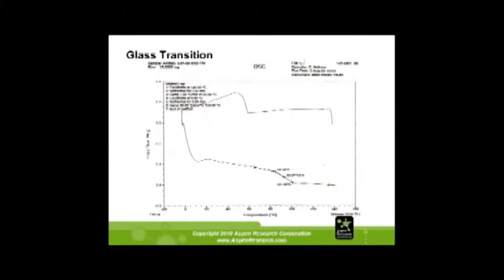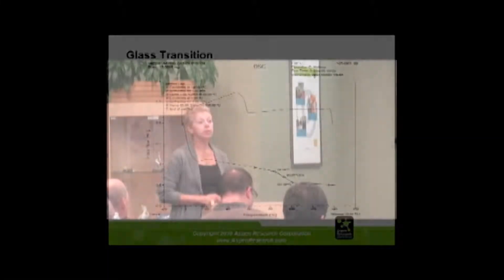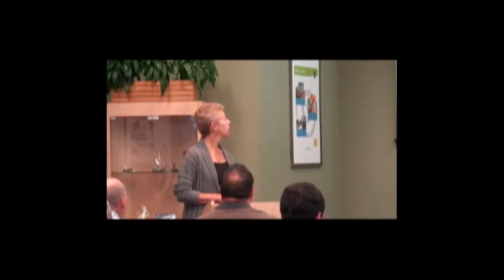Here's a glass transition monitoring application we run for one of our customers. We know that the material needs to have a glass transition around 93 degrees. So periodically throughout the day we monitor the glass transition to make sure it stays within the required range.